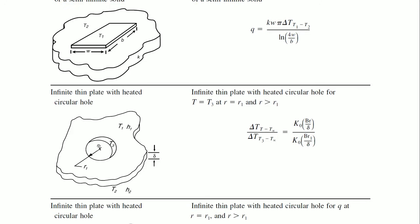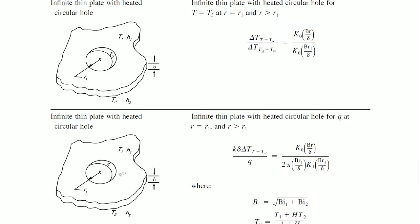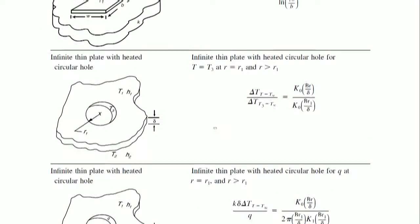An infinite thin plate with a heated circular hole — this is what applies if you have a stud-mounted transistor. Inside it is usually made of copper, so you clamp it and treat it like a large plate. If you have several of these things, you can analyze how they behave.